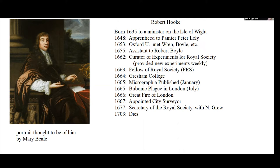Not only did he observe the red spot, he used the fact that it moved from day to day to determine the rotation period of Jupiter. Remember, this is about 50 years after Galileo's work became clear. So he started out as the Curator of Experiments — and this was not only a paid position for him, but it was the first time a scientist got a job being paid for doing science.